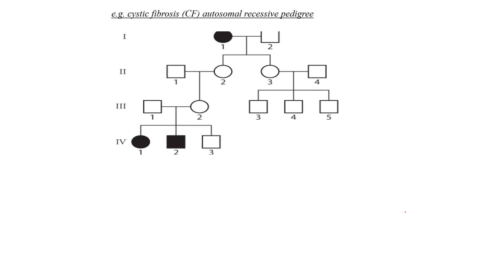When you take a look at these pedigrees, circles represent females and squares represent males. When you see a line connecting two individuals to offspring below — in this case two females — that line tells you that couple had children. Generations are indicated by Roman numerals, so individuals I-1 and I-2 are from the first generation, and that line tells us they had some babies.